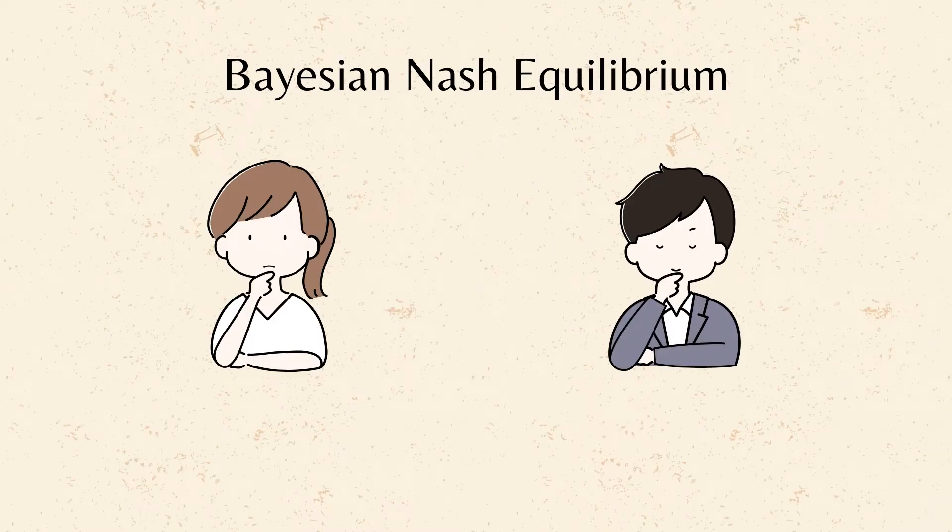A Bayesian Nash Equilibrium is a refinement of Nash Equilibrium, where players have incomplete information about the other players.